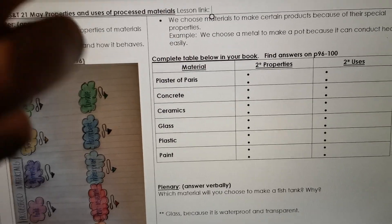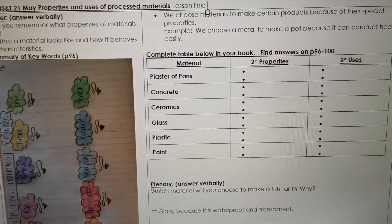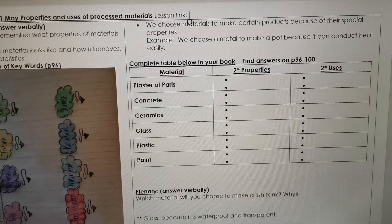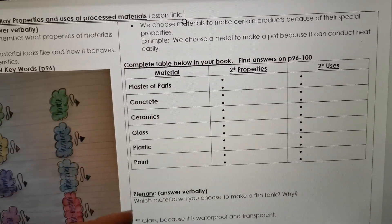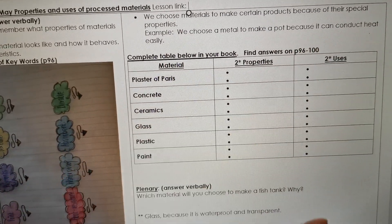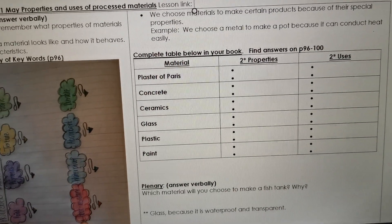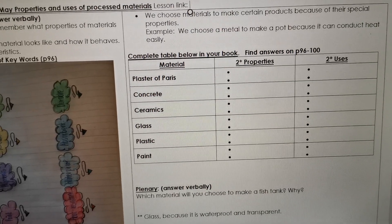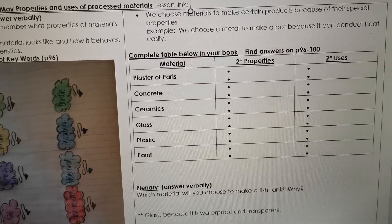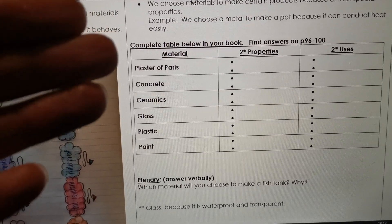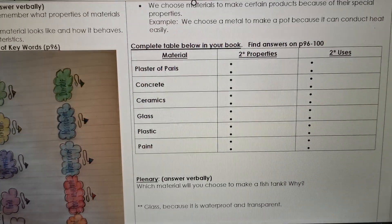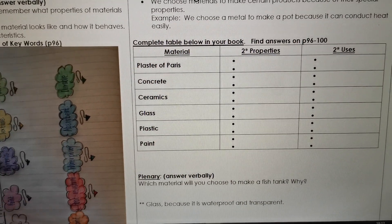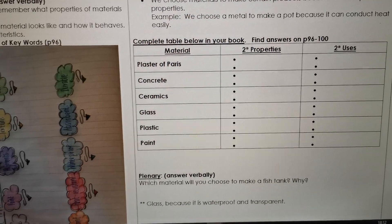If you look at the activities, you're going to copy and complete this table. Three columns: material, two properties for each material, and two uses for each material. You're going to find your answers on pages 96 to 100. So you're going to look for plaster of Paris and find two properties and two uses. Same with concrete, ceramics, glass, plastic, and paint.